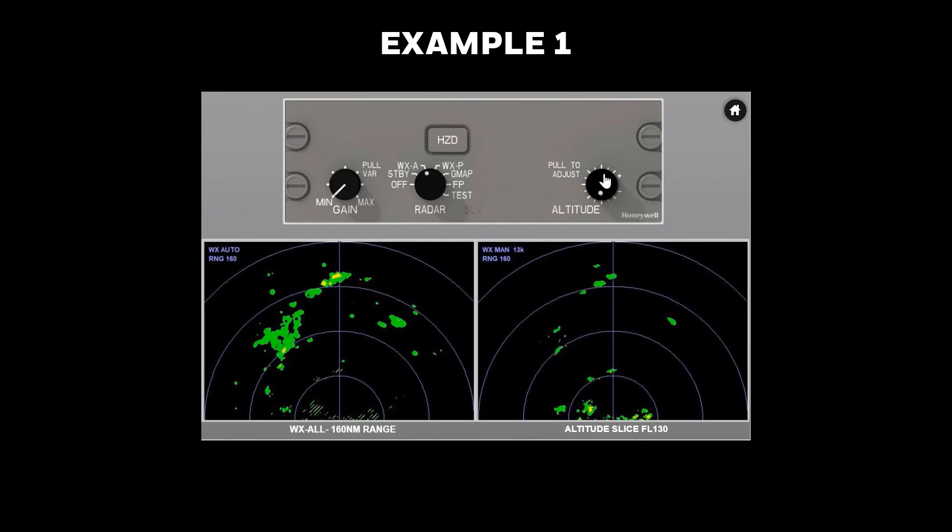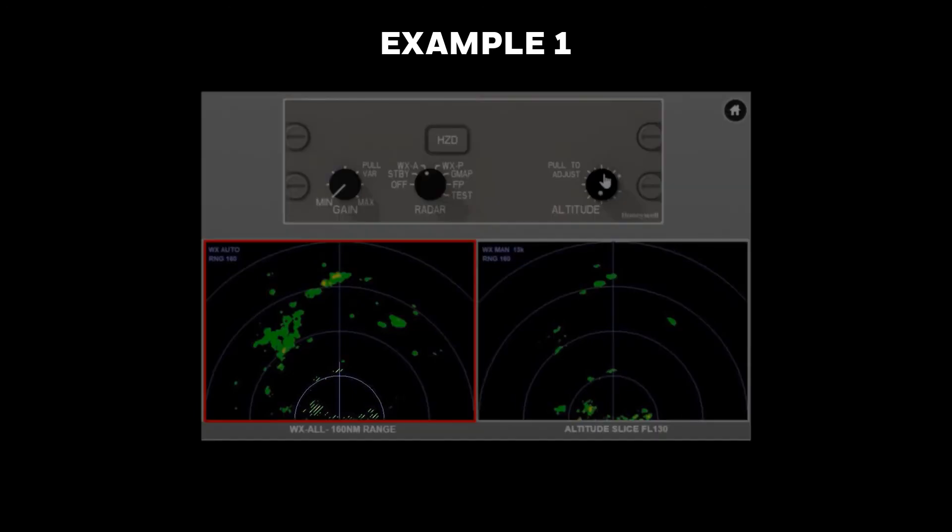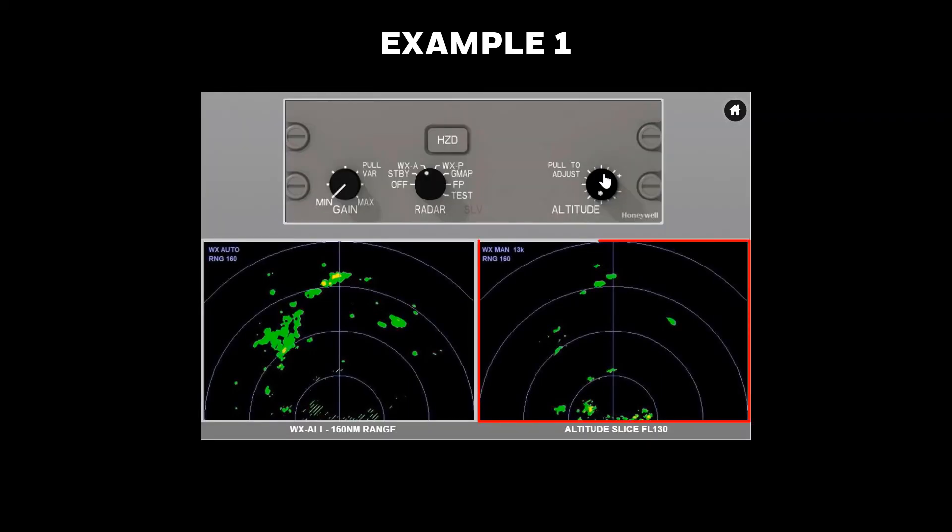In this example, the aircraft is at flight level 400 over Louisiana. Looking at the auto mode on the left, there are some cells with low tops and low reflectivity near the aircraft, which are non-threatening. This is indicated by the hashed lines within approximately 40 nautical miles. 120 miles ahead, there is some yellow reflectivity that warrants attention. Let's look at these two features using constant altitude slices.